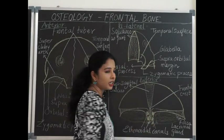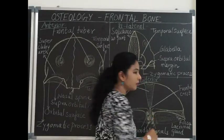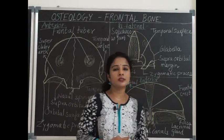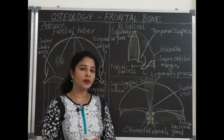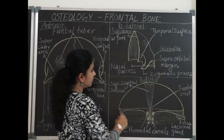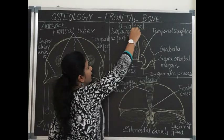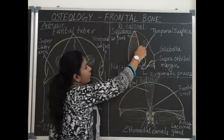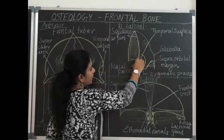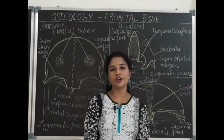Turning inferiorly, we can see air cells or air sinuses called ethmoidal canals — anterior, middle, and posterior ethmoidal canals are seen. This part articulates with the ethmoid bone, specifically the cribriform plate of the ethmoid bone, through which ethmoidal vessels, nerves, and the olfactory nerve pass. Laterally, the frontal bone articulates posteriorly with the parietal bone, forming the parietal margin, and inferiorly on the lateral side it articulates with the greater wing of the sphenoid bone.